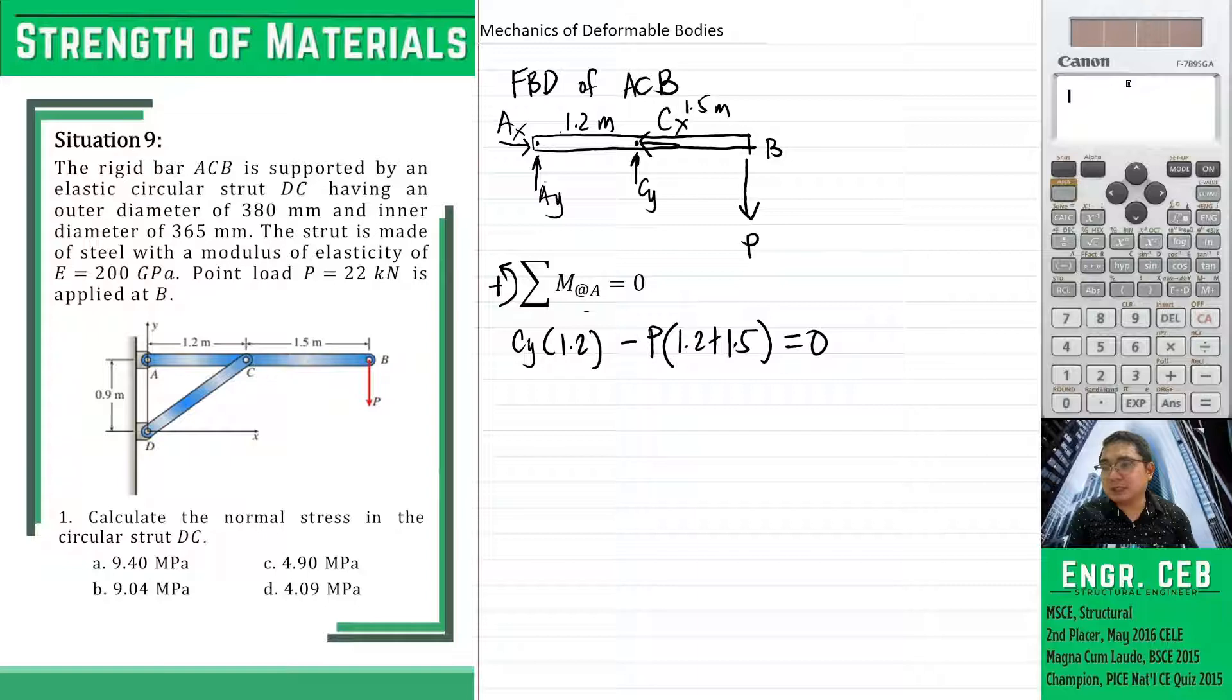Moments of AY, AX and CX will be cancelled since the line of actions of these forces are passing through A. So that is why they will be cancelled. So we now have our equation.